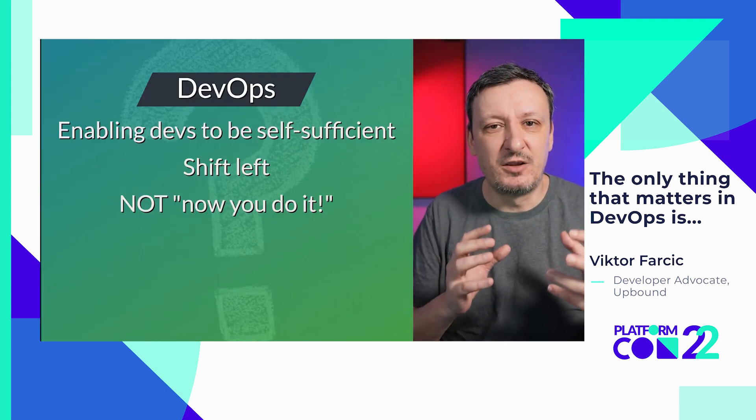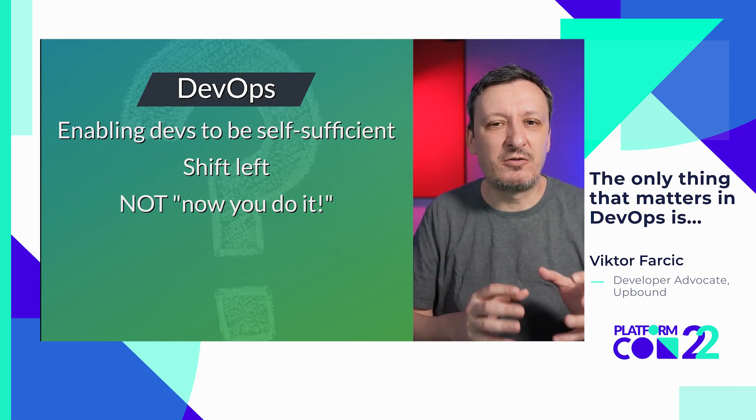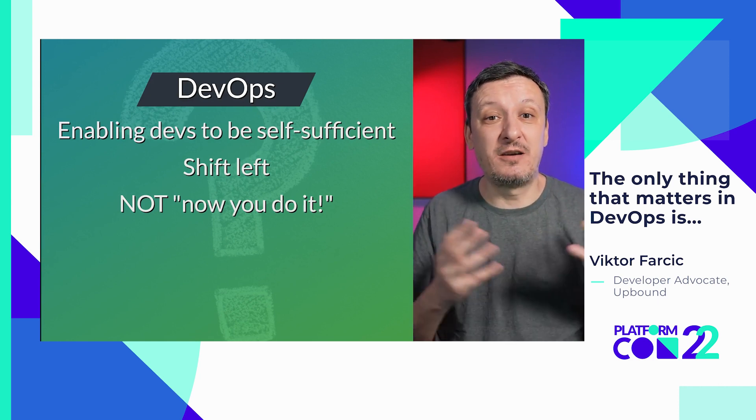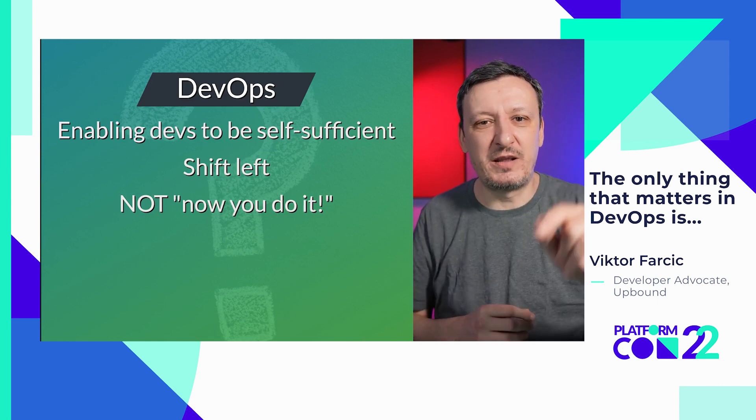Now, what is DevOps according to my definition? It is about combining development and operations with the goal — and this is important — to enable developers, or everybody else, to be self-sufficient. It is about shifting left. We cannot say 'now you do it' after spending three years learning Kubernetes and half a year on service mesh. Yet we also cannot continue with the old idea that everybody opens Jira tickets whenever they need something and then waits.